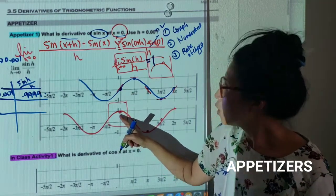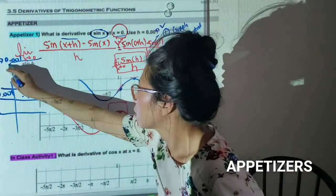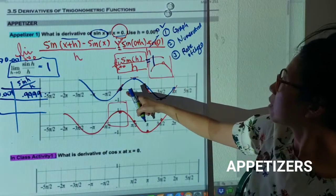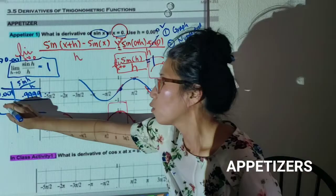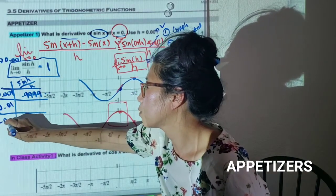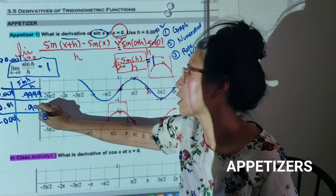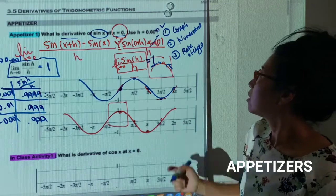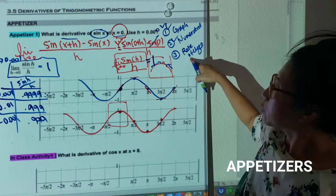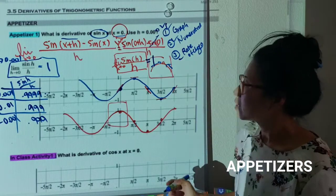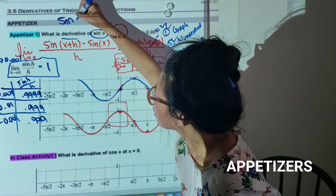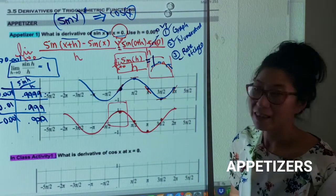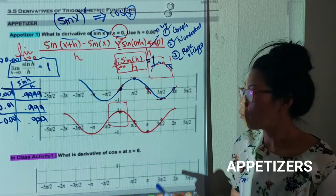So already you see that goes to one, which means the slope is one. The derivative function will be one at that point. I showed it graphically and numerically by plugging in values. You can also plug in 0.1 or negative 0.001 — all give around 0.999. So the limit goes to one. Don't forget: the sine function derivative is cosine x.